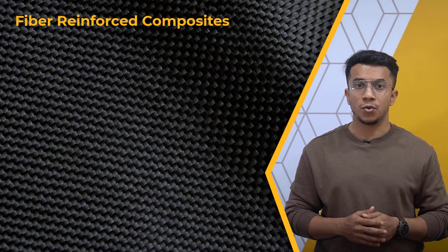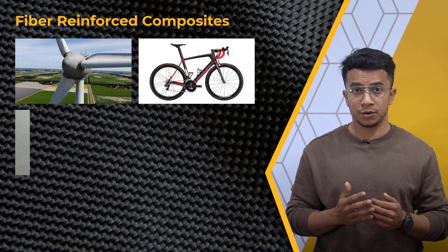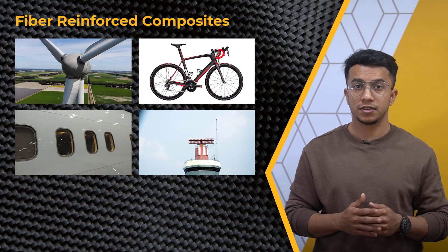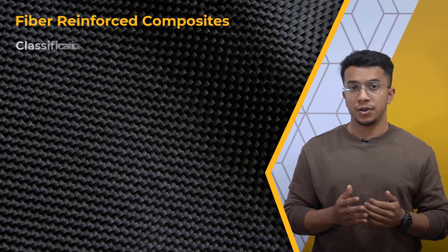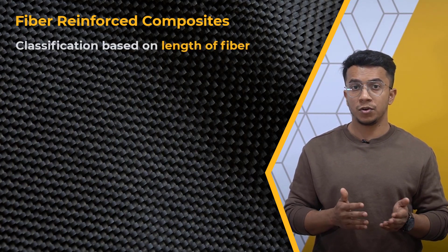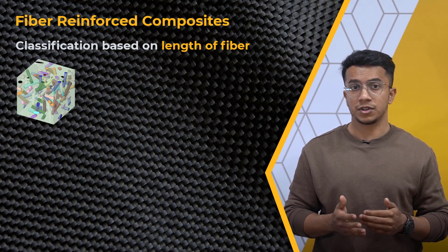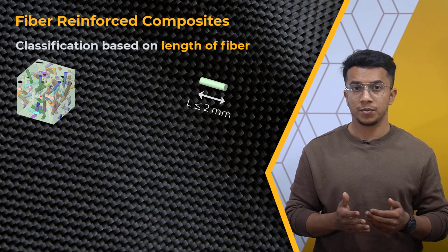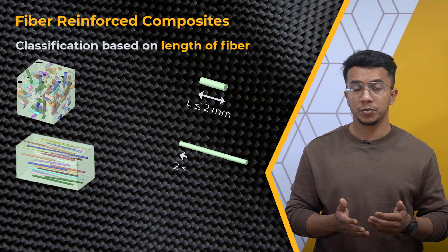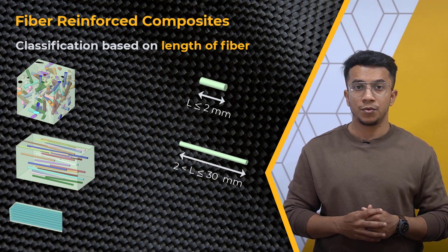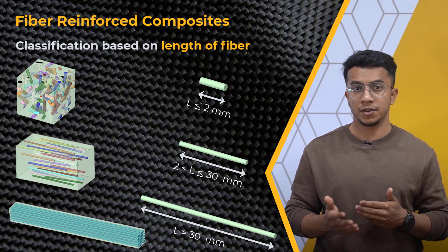Fiber reinforced composites are widely employed in sectors such as wind energy, sporting goods, aerospace and defense, civil engineering, automotive, and beyond. The length of the fiber used as reinforcement is one popular way to classify them. We have short fiber reinforced composites with fiber lengths under 2 mm. Fiber lengths in long fiber reinforced composites range from 2 mm to 30 mm. When the fiber length exceeds 30 mm, the material is classified as an endless fiber reinforced composite.